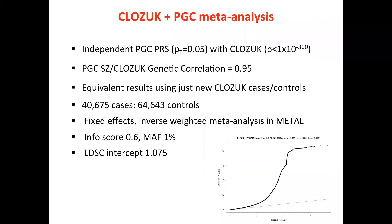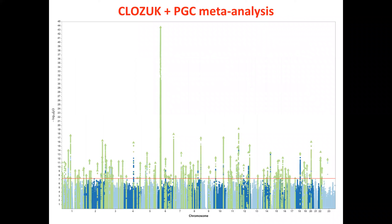These results reinforced that we could combine CLOZUK with the PGC. Using a polygenic threshold of p=0.05 we get very strong polygenic overlap, and the genetic correlation confirms this. The new cases give equivalent results. Combining gives a total of just over 40,000 cases and nearly 65,000 controls. We used METAL and fixed effects, refiltered based on PGC thresholds, and got a reassuring LD score regression intercept and lambda-1000.